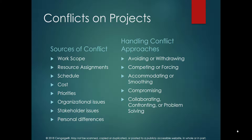Compromising involves team members trying to find an intermediate position, but this may still not completely solve the problem. The best approach is collaborating, confronting, and problem solving — here both parties try to come up with a win-win outcome, finding a solution that benefits all while preserving the relationship between individuals.